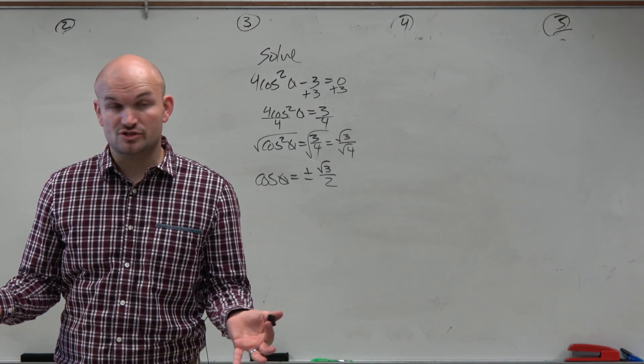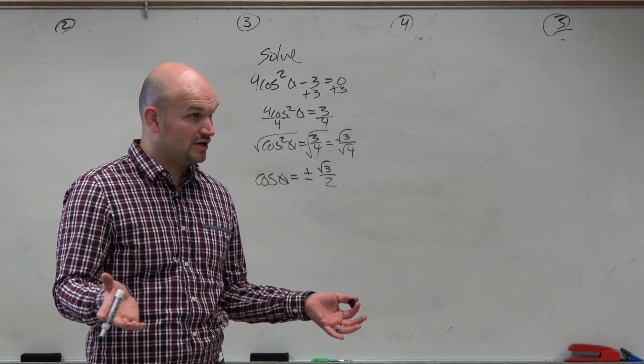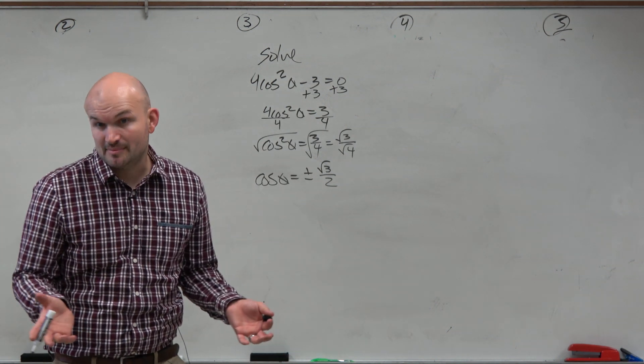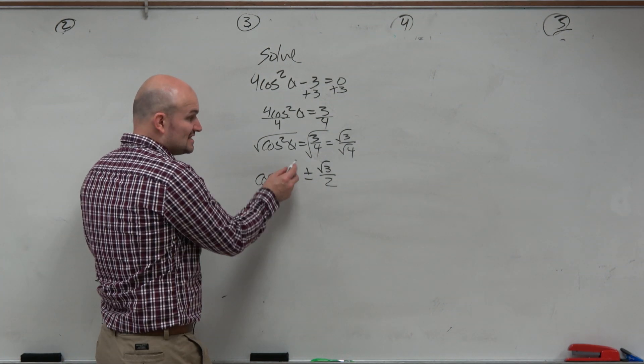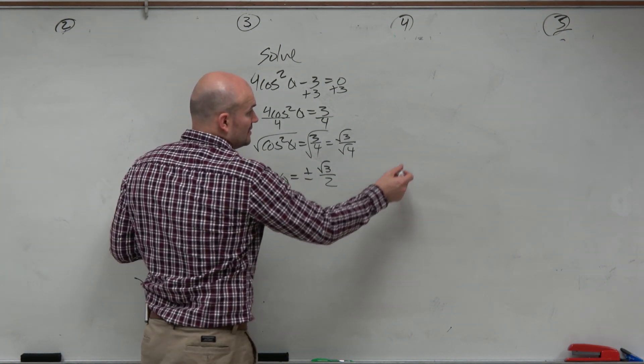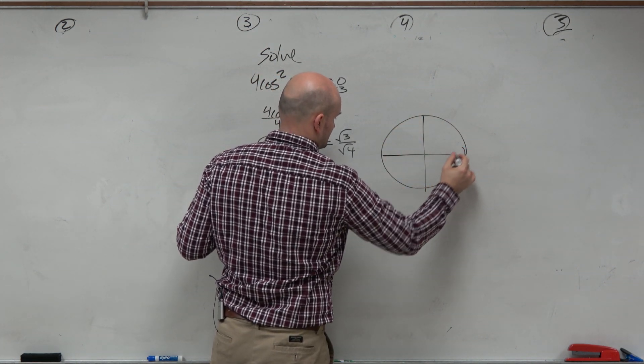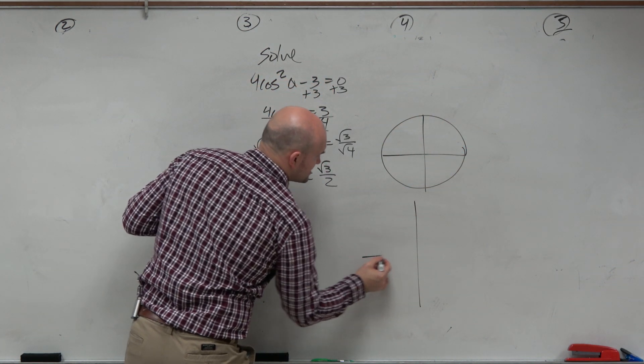And are we aware of cosine of theta plus or minus square root of 3 over 2 on the unit circle? Yes, that's going to be at the pi over 6, right? But again, that's all positive and all negatives. So if we go and look at the unit circle here, actually, we can do this over here, the nice big one.